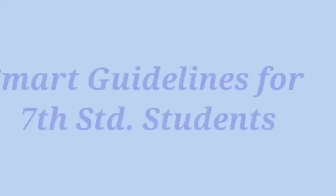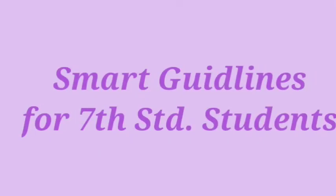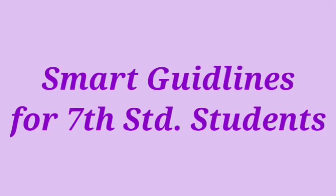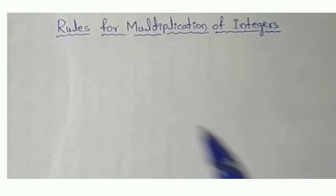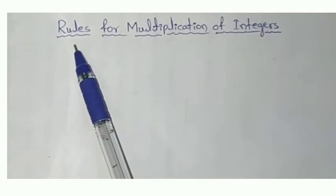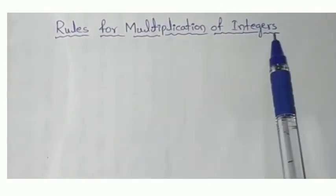Today, we are here discussing some smart guidelines for 7th standard students. Chapter name: Integers, that is Part 3. Here, I am going to discuss rules for multiplication of integers.